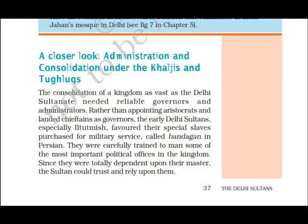The next topic is a closer look at administration and consolidation under the Khaljis and Tughlaqs. Consolidating a vast kingdom like the Delhi Sultanate required reliable governors and administrators. Rather than appointing aristocrats and landed chieftains as governors, the early Delhi Sultanate — especially Iltutmish — favored special slaves purchased for military service, called Bandagan in Persian.